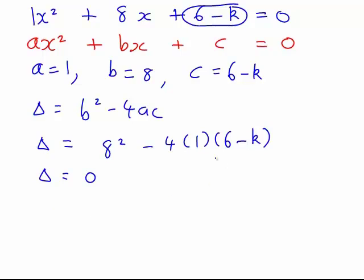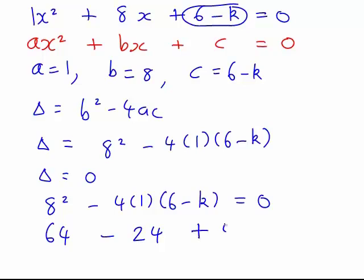We want to find the value of k such that 8 squared minus 4 times 1 times 6 minus k equals 0, in order to find the value of k such that the graphs meet at a single point. This becomes 64 minus, if we expand and simplify, 24 plus 4k equals 0, which gives us 40 plus 4k equals 0. Therefore, k equals negative 10.